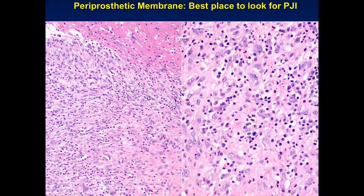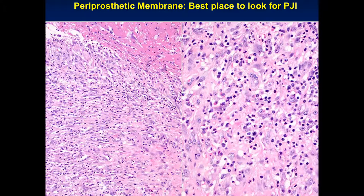When looking for periprosthetic joint infection, I concentrate on the interface of fibrin and soft tissue — the periprosthetic membrane — which is the best place to find neutrophils if they are present. This area is usually away from the arthroplasty wear debris. At higher power, you can see large numbers of neutrophils within this loose granulation tissue-type area adjacent to fibrin. This is the area of highest yield, so when reviewing a revision arthroplasty frozen section, I focus on moving away from areas of arthroplasty effect and toward this periprosthetic membrane fibrin-soft tissue interface.